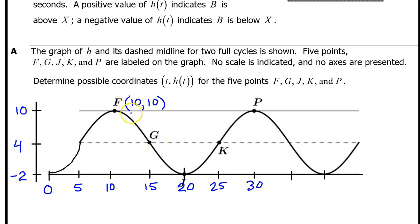Now we just need to list off the coordinates for each of the five points. For example, point F is at (10, 10). Point G is at (15, 4). And point J is at (20, -2). Point K is at (25, 4). And point P is at (30, 10).